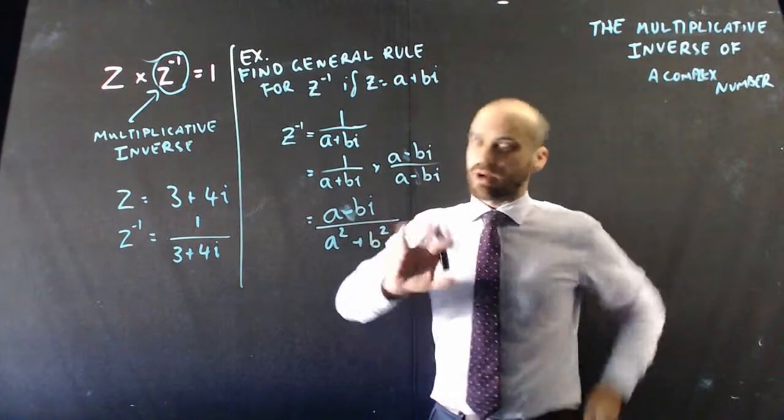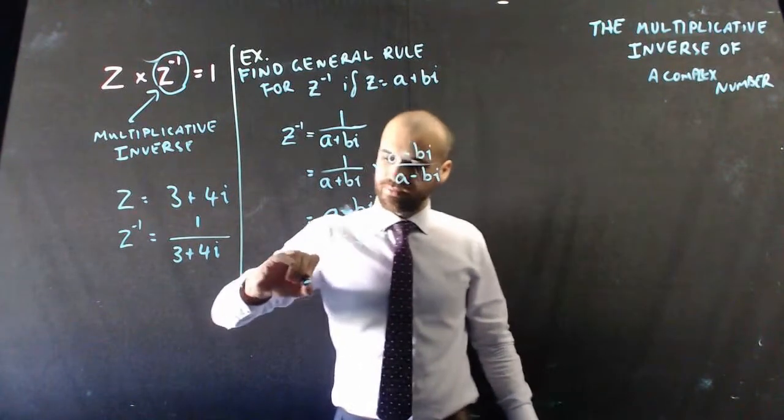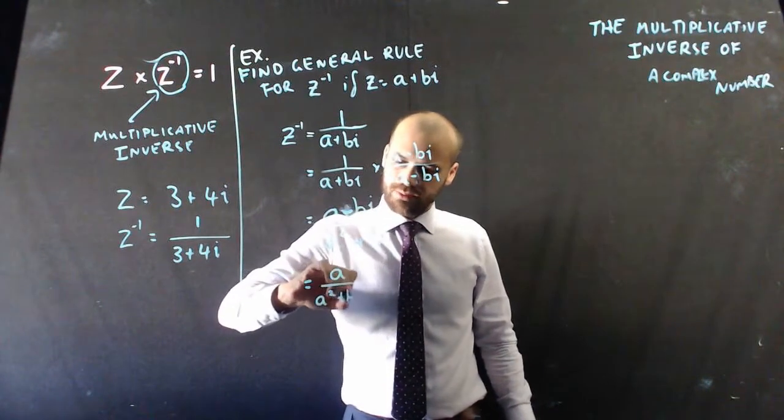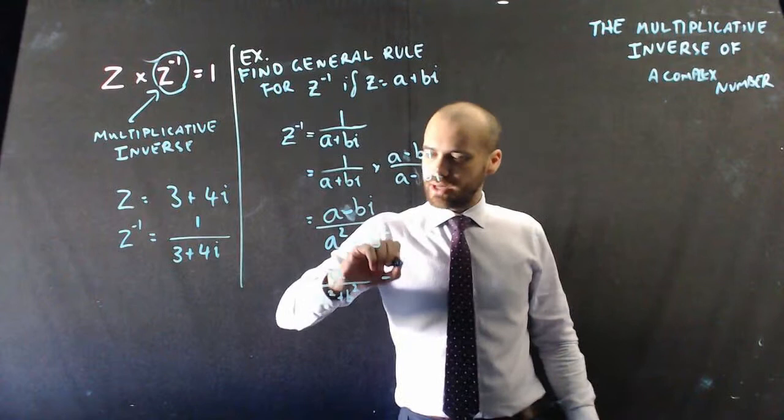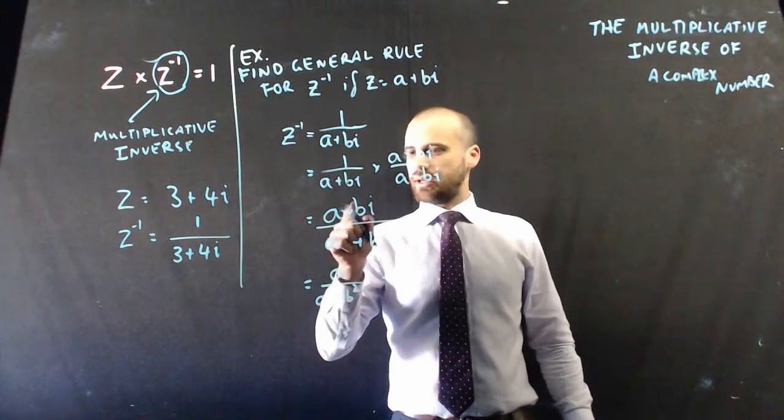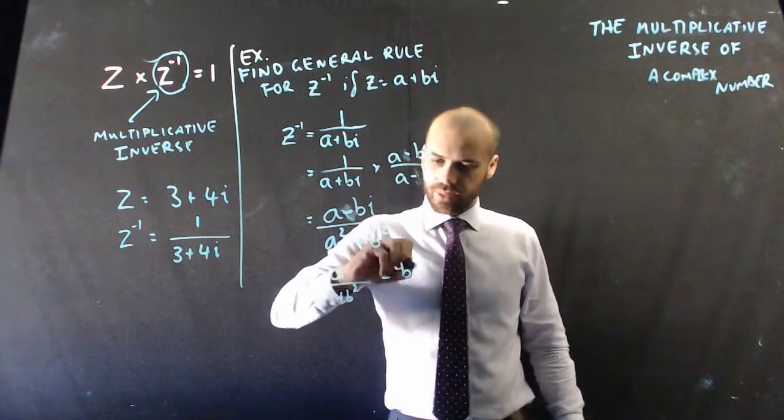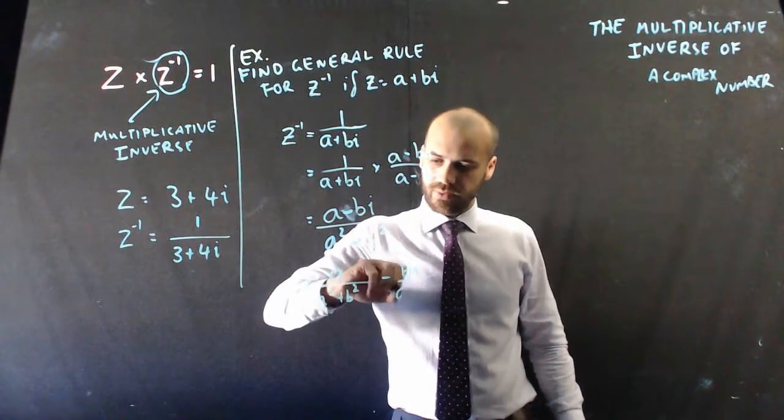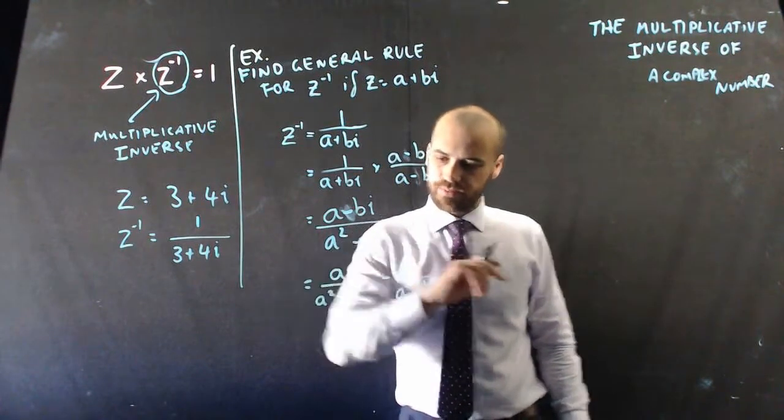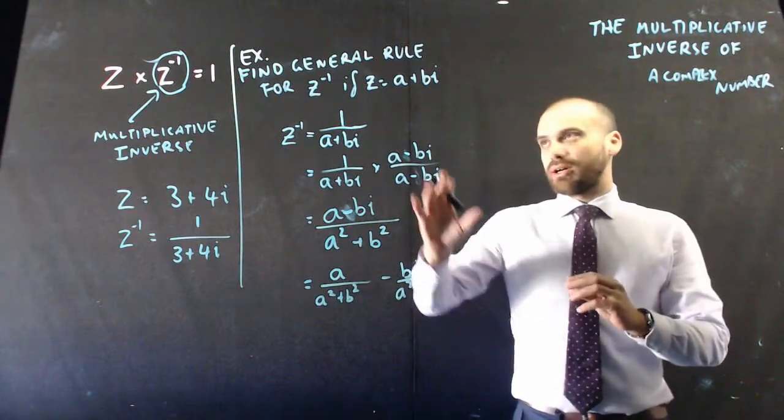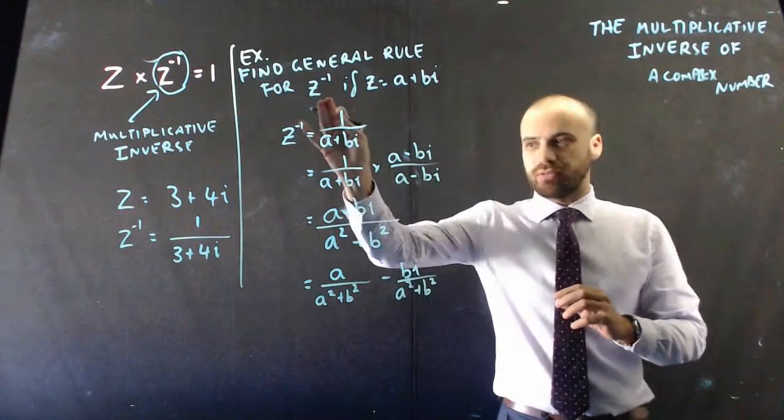And I could probably break it apart, because we always tend to break it apart. But a over a squared plus b squared minus bi over a squared plus b squared. Alright. There's a nice little general rule for the multiplicative inverse.